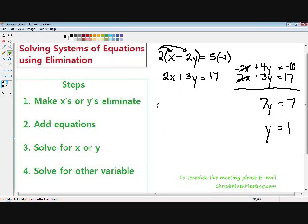So I'm going to bring down 2x plus 3 times 1, because we know y equals 1, equals 17. This becomes 2x plus 3 equals 17.